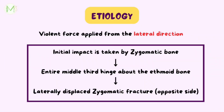LeFort III fracture occurs due to violent force which is usually applied from the lateral direction with severe impact. The initial impact is taken by the zygomatic bone, making it a depressed fracture, thereby causing the entire middle third to hinge about the fragile ethmoid bone. The impact of the severe force becomes transmitted to the contralateral side, which results in a laterally displaced zygomatic fracture of the opposite side.